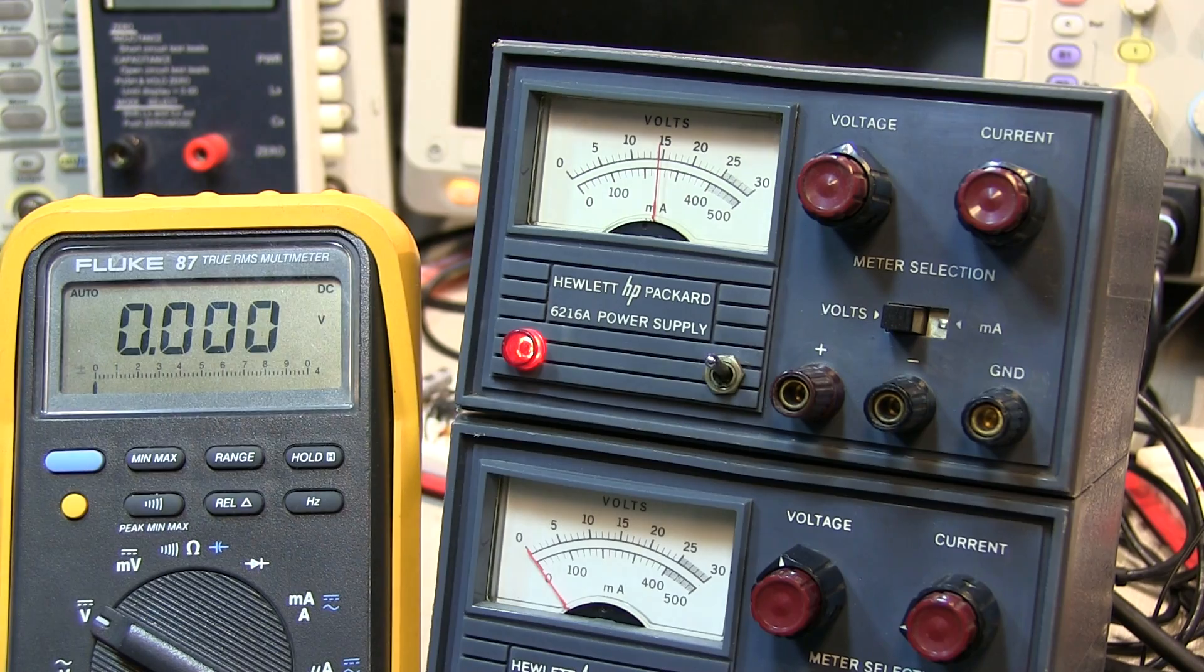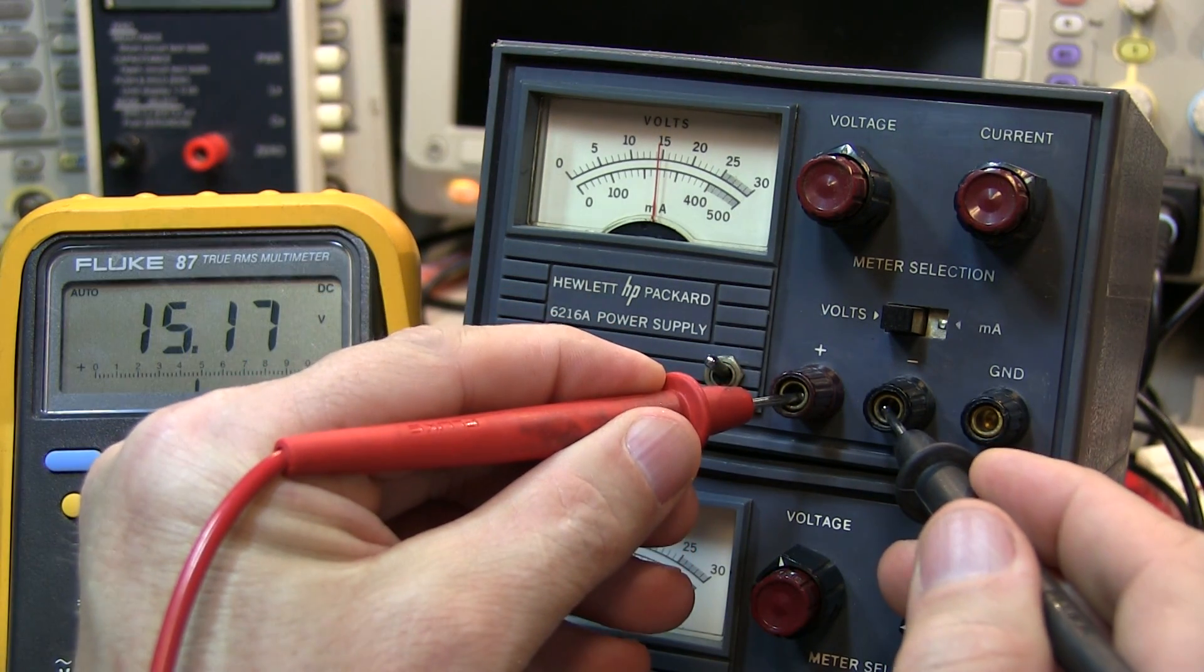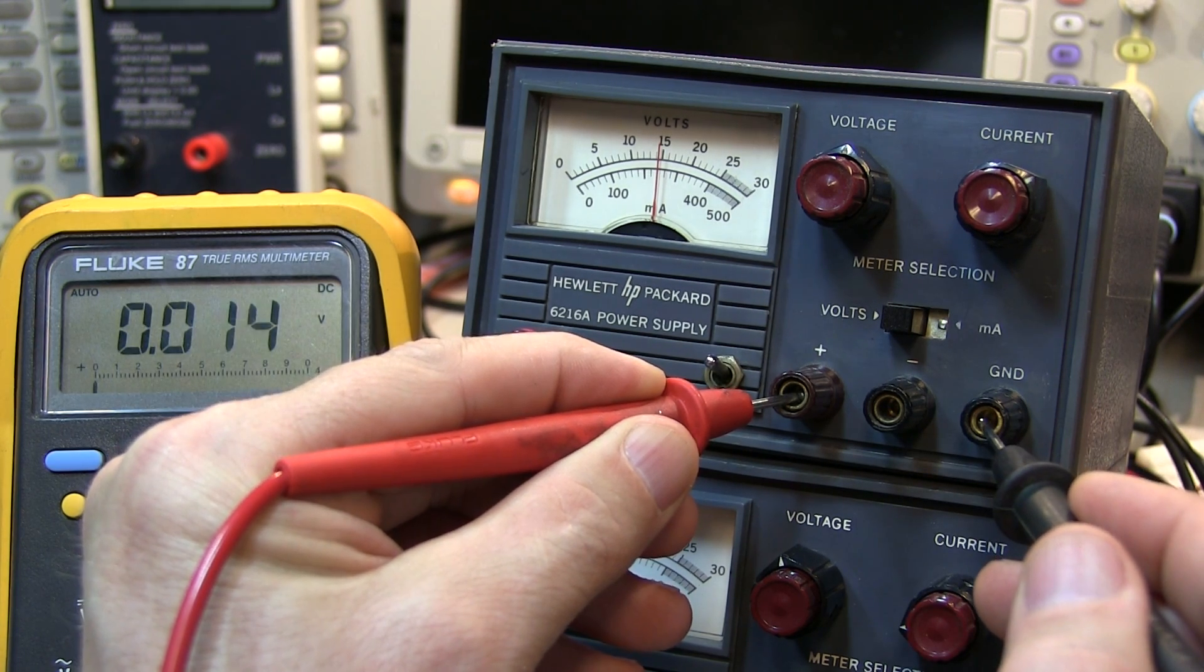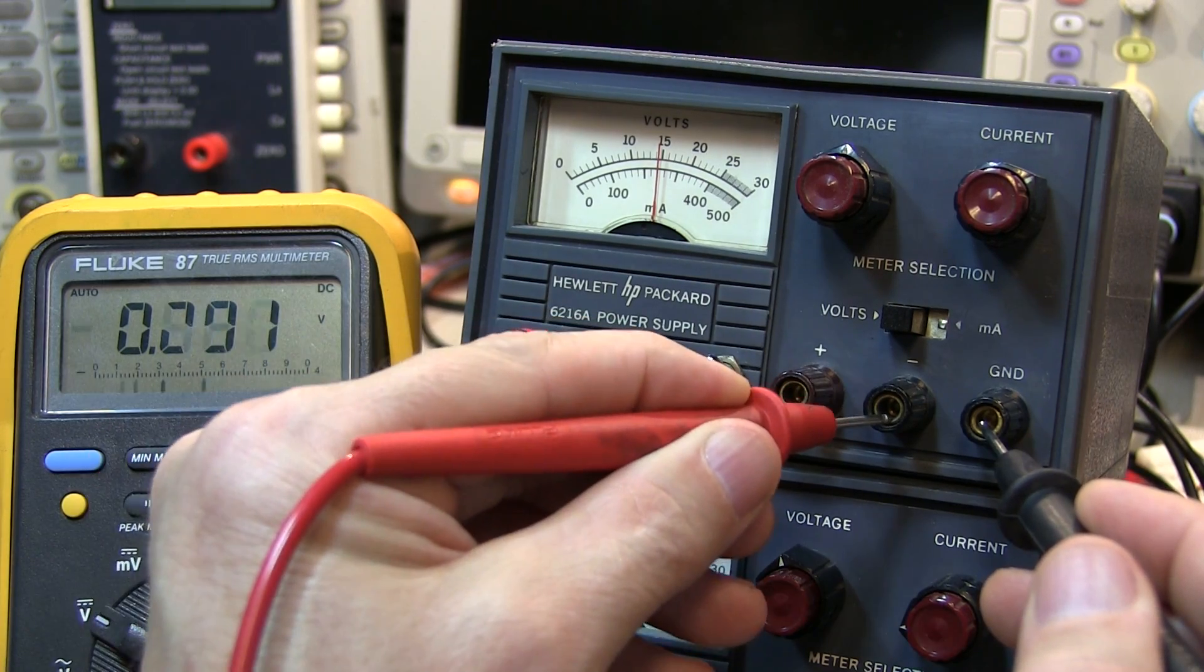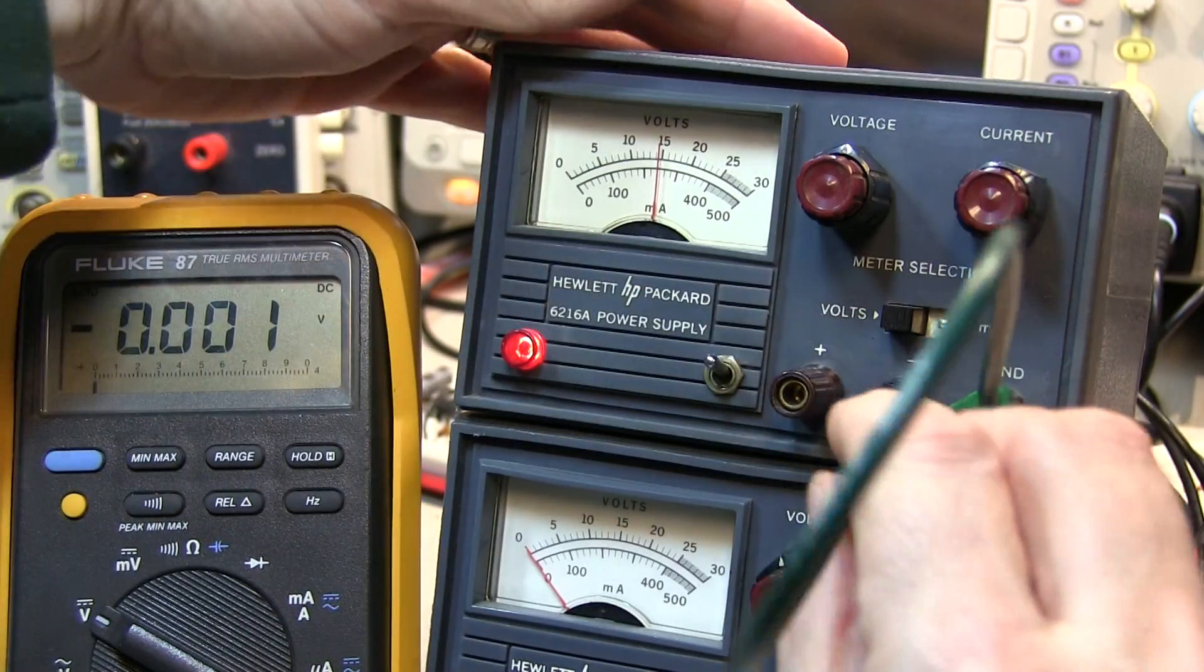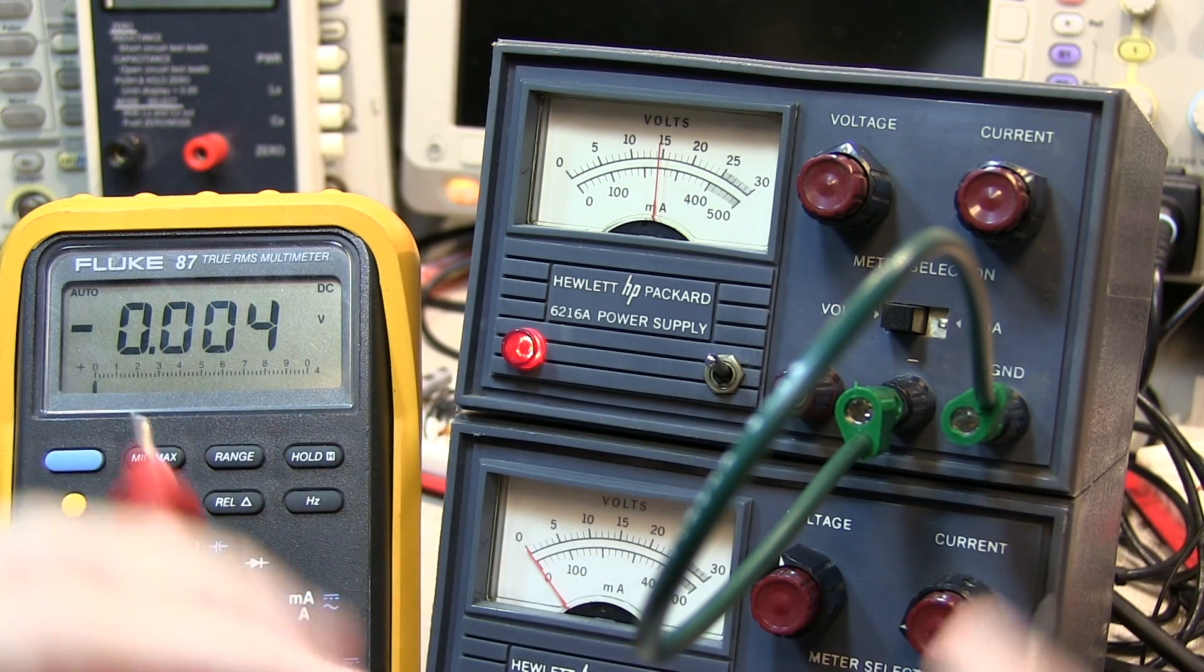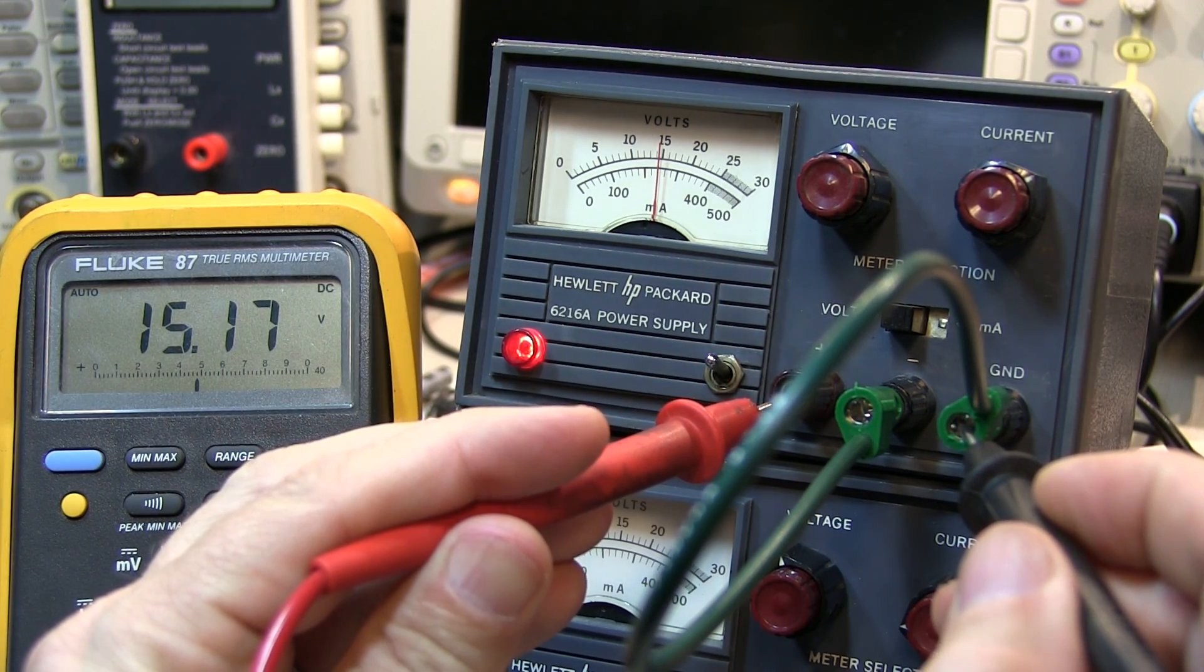If I turn the power supply on here, we can see that I've got about 15 volts or so between the positive and negative terminals. But with respect to ground, there really isn't any predefined voltage at all. But we can take a jumper and connect the ground terminal to the negative output. And now with respect to ground, we can see that we've got a positive 15 volts with respect to ground.